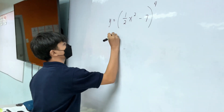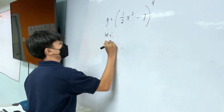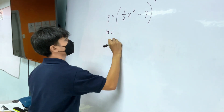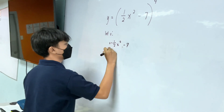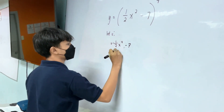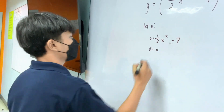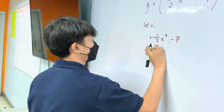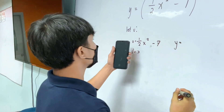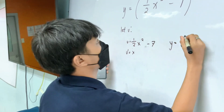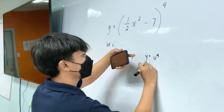Ang gagawin natin is that u is equal to 1 half x squared minus 7. Tapos, kukawin natin yung derivative niya. Ang derivative niya is x na lang, since 2 times 1 half is equal to 1 and the 1 is invisible dito. Kaya alis na natin. Tapos, ang value ng y is — since nirepresenta natin ito as u — ito na yung lalagyan natin ng u, raised to the 4th power, and kukawin din natin yung derivative niya.